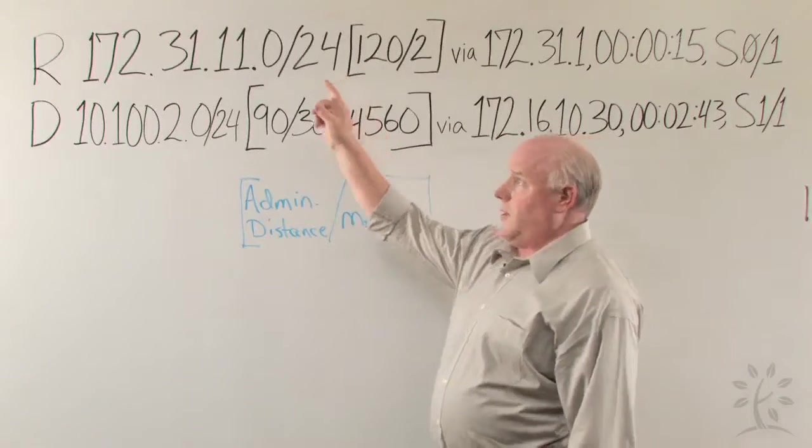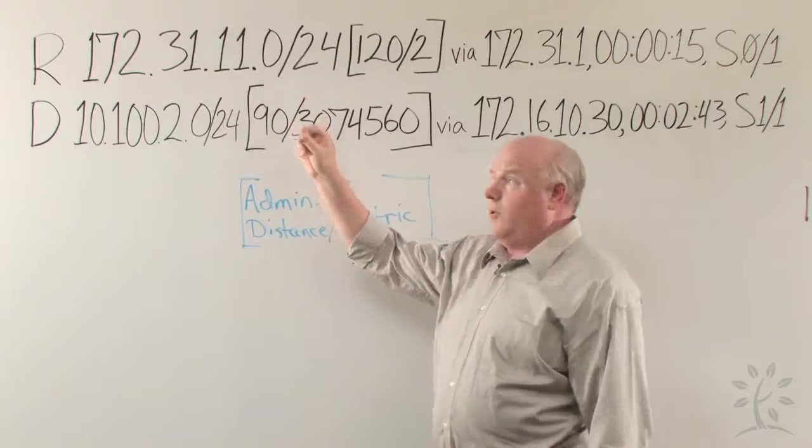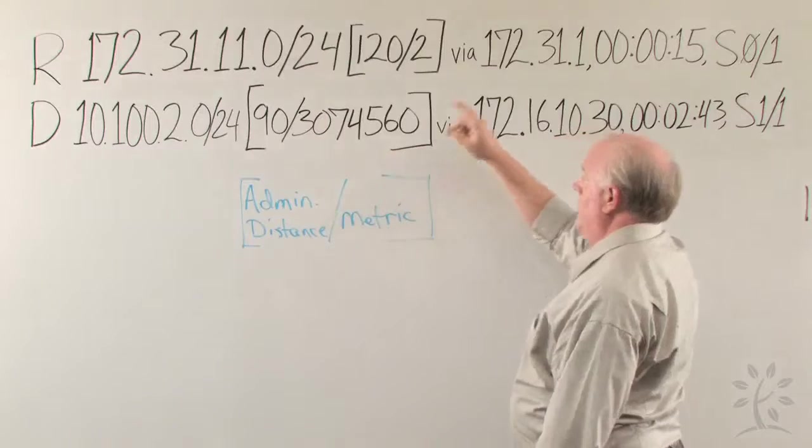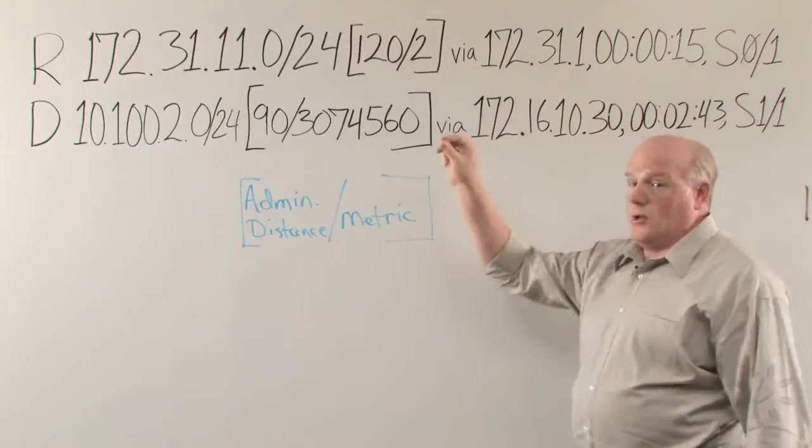So we know that the router has learned this route from RIP, and it has a route to this network via this network, and that's generally all we look at.